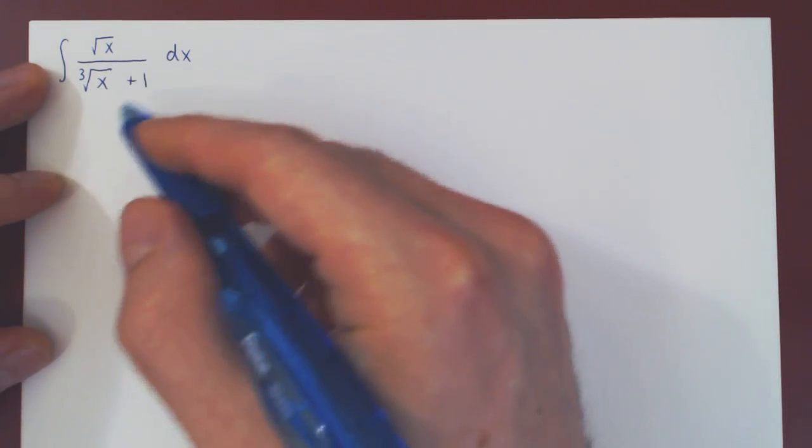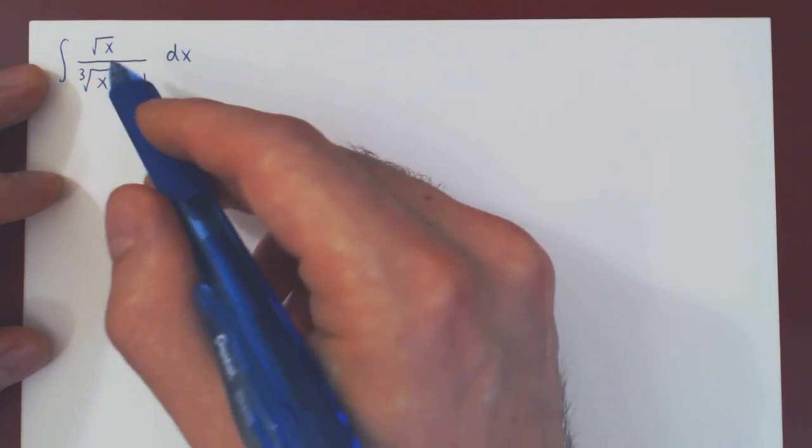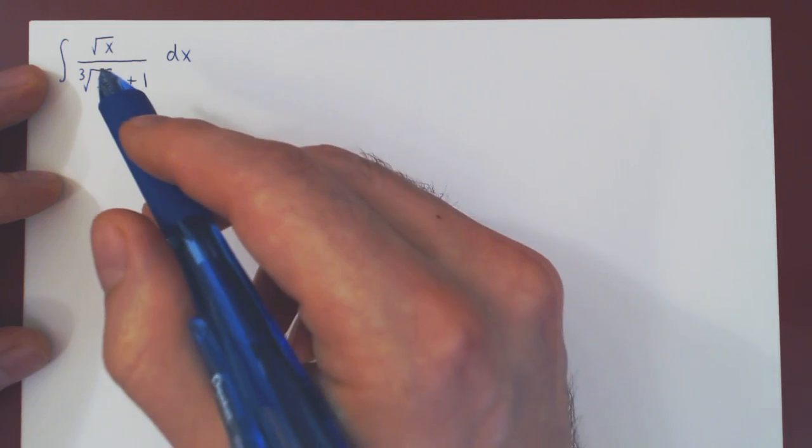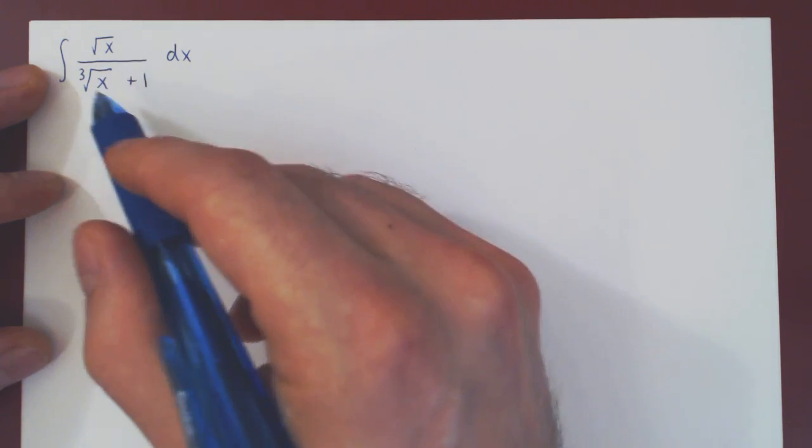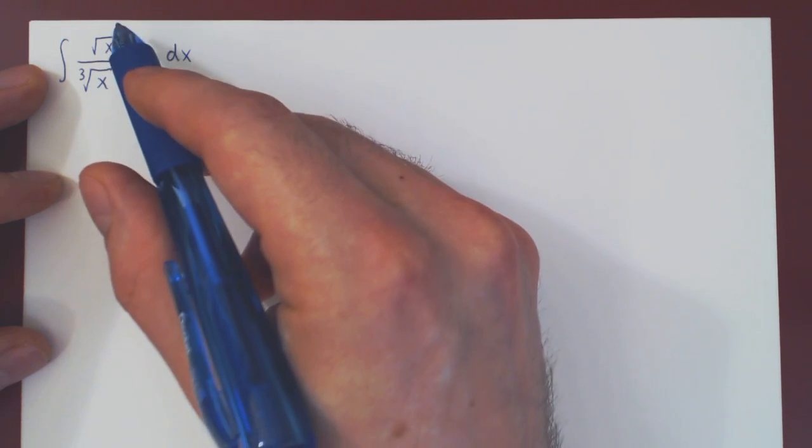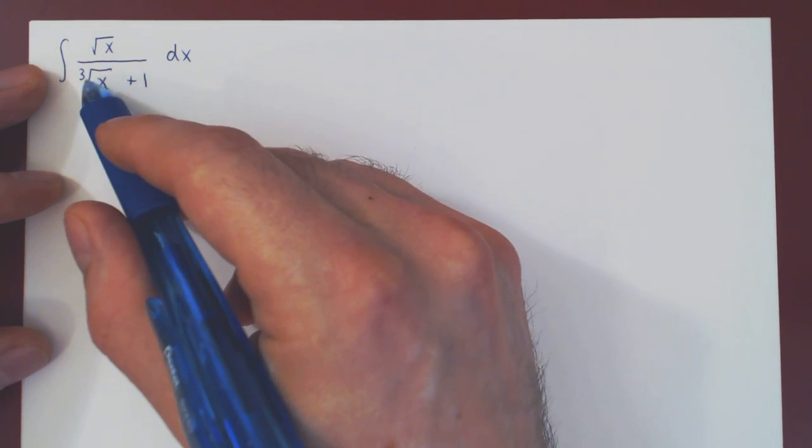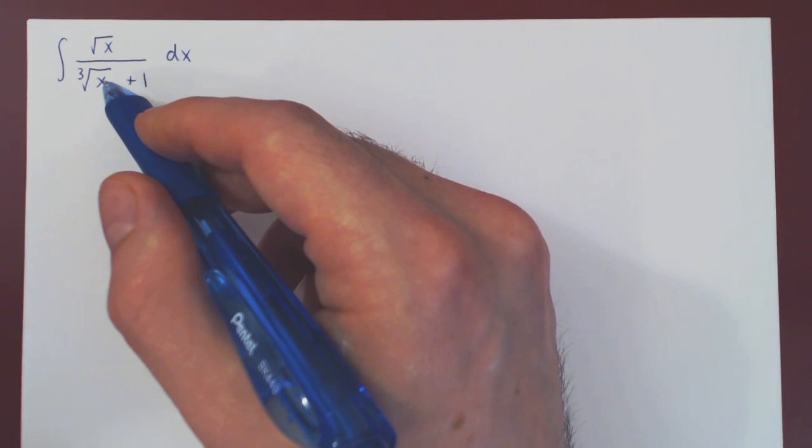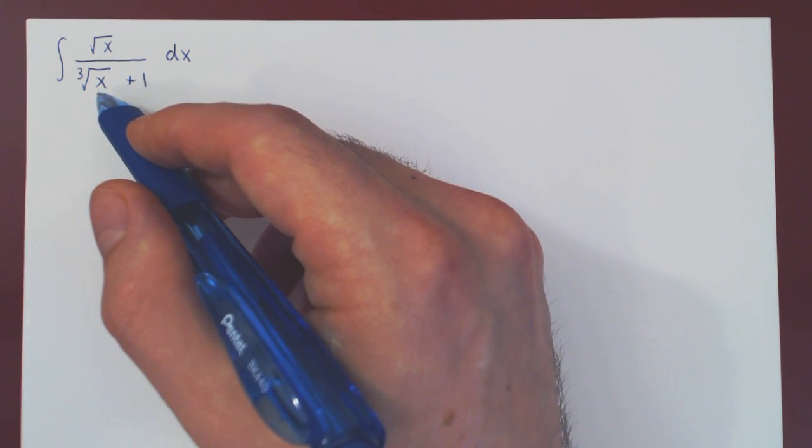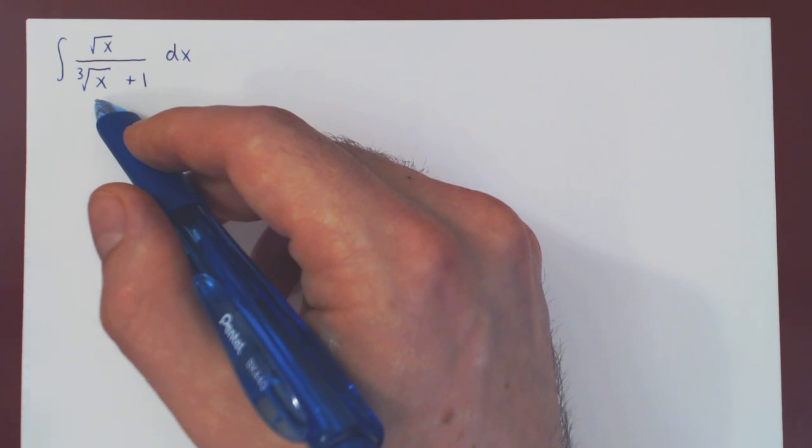So here's the first example. We want to integrate the square root of x over the cube root of x plus 1, with respect to x. This is clearly not a rational function, as we have fractional powers of x. The square root is the power of 1 half, the cube root is the power of 1 third. A rational function is the ratio of polynomials, and polynomials are linear combinations of integer powers of x.